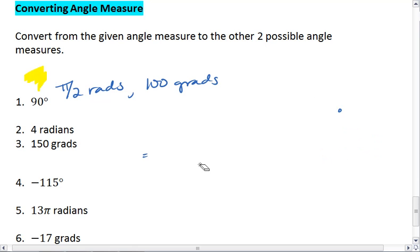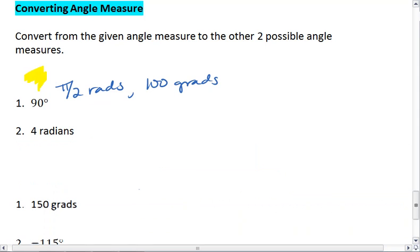Well, what about if I have 4 radians? 4 radians means I have 4 of the possible 2π, or 6.28. It really doesn't matter which way you work, which can reduce down to 2 over π. So I have this fraction of a circle.